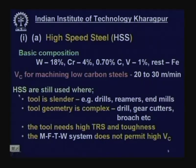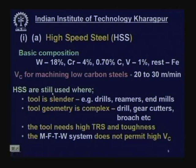Though high speed steels were introduced around 1905 with limited quality, this primitive tool material is still utilized nowadays and will continue to be used for perhaps another 50 years. Why is high speed steel — capable of machining only at 20 to 30 meters per minute — still utilized when high performance ceramics and diamond tools have been developed?